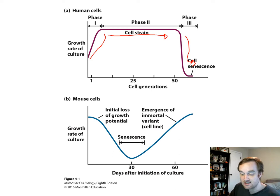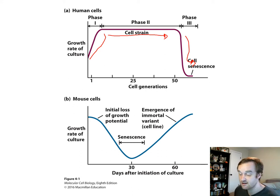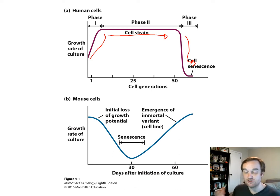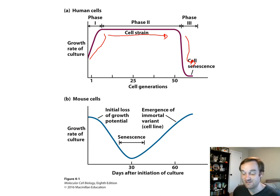Very rarely, cells can accumulate oncogenic mutations, similar to cancer, that allow them to survive and continue dividing until their progeny overgrow the culture. This creates what we call an immortal cell line, which will grow indefinitely as long as you appropriately dilute them, don't let them outgrow their vessel, and continue to feed them nutrients.